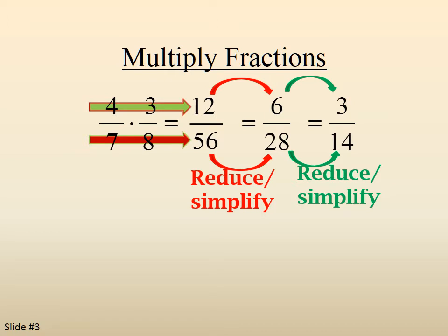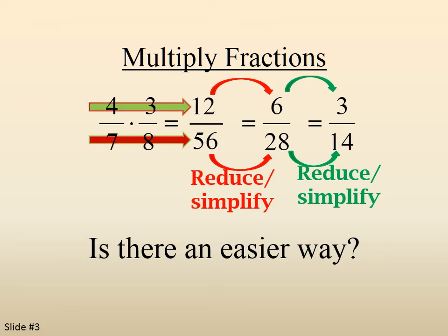And now we're down to 3 over 14. Is there an easier way?